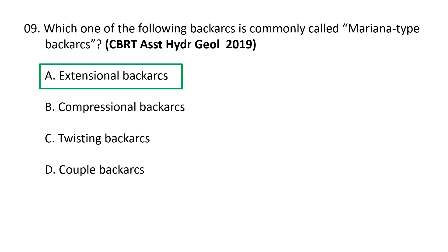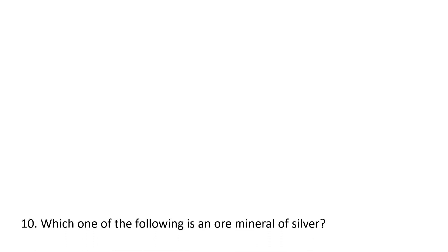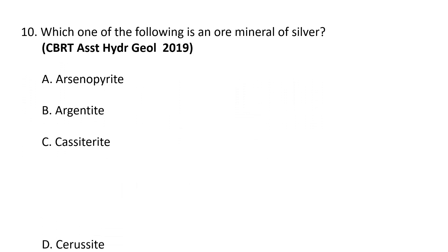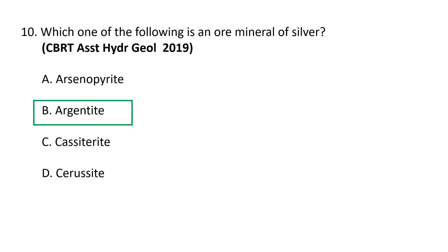Next question: which of the following is an ore mineral of silver? a) arsenopyrite, b) argentite, c) cassiterite, d) sericite. The silver ore mineral is argentite. Argentite is a silver sulfide mineral and an important constituent of silver ore deposits; it contains 87% silver and forms blackish-gray coatings or masses with a metallic luster. So b) argentite is the correct option.